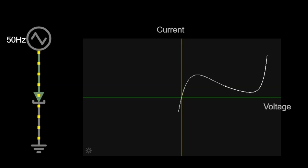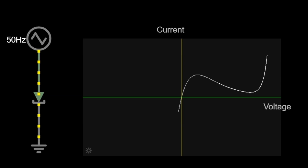Now, let's look at how the tunnel diode behaves when we increase the voltage. At first, when we start pushing with a little voltage, the electricity flows easily because the electrons can tunnel through. This is called the tunneling effect.